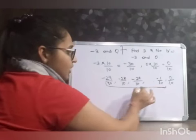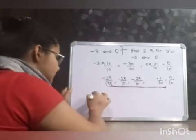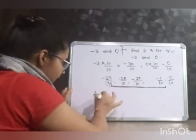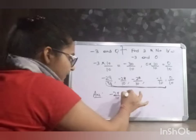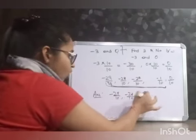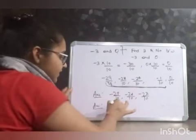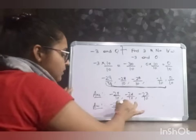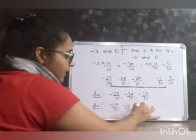So, choose any three rational numbers out of these. The answer can be minus 29 by 10, minus 28 by 10, minus 27 by 10. Or, the answer can be minus 27 by 10, minus 26 by 10, or minus 25 by 10.